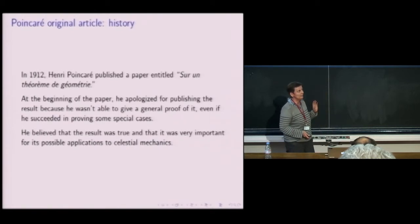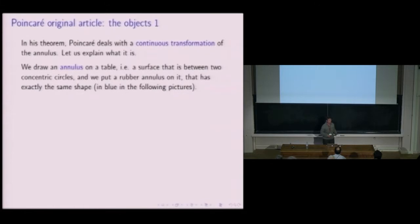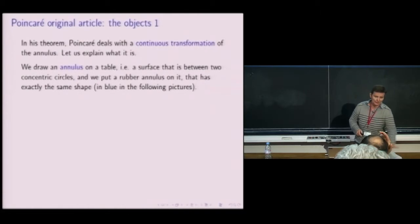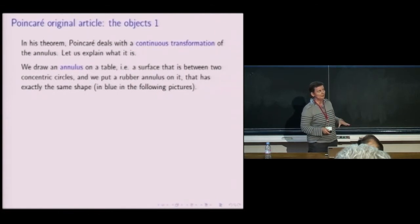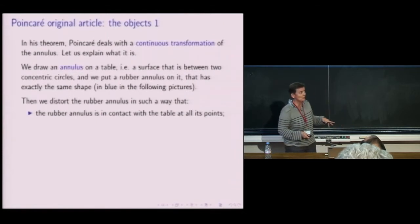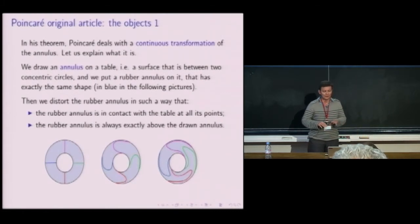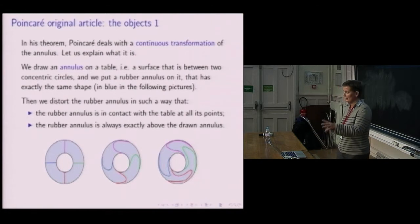Before stating the theorem, let me recall what is a continuous transformation of an annulus. An annulus is a planar surface between two concentric circles. Imagine that you draw on a table an annulus, and you put exactly on this drawn annulus another annulus — a rubber annulus — and you distort your rubber annulus in such a way that the rubber annulus is always in contact with the table at all its points and always exactly above the drawn annulus. So you always have the same general shape, but inside points are moving.